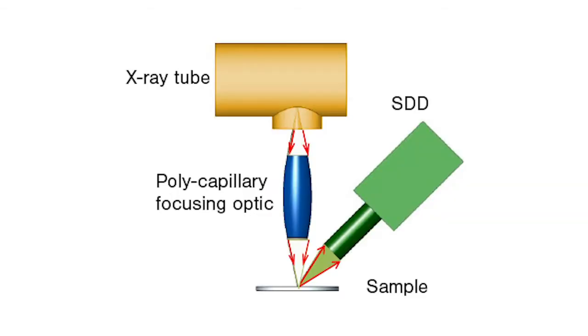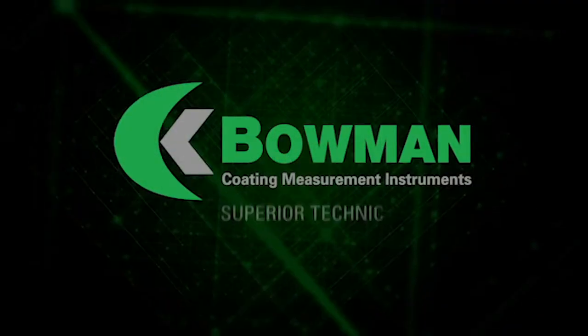That would require what we would call a capillary optics model, like the O, M, or W series. That's the two main differences — it's always customer-driven. We'd like to have as few models as possible to simplify the manufacturing process, but customer demands, and we deliver.